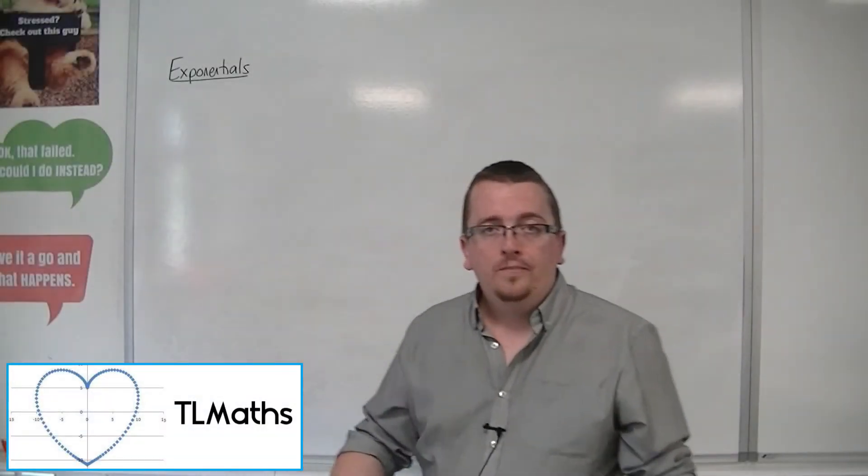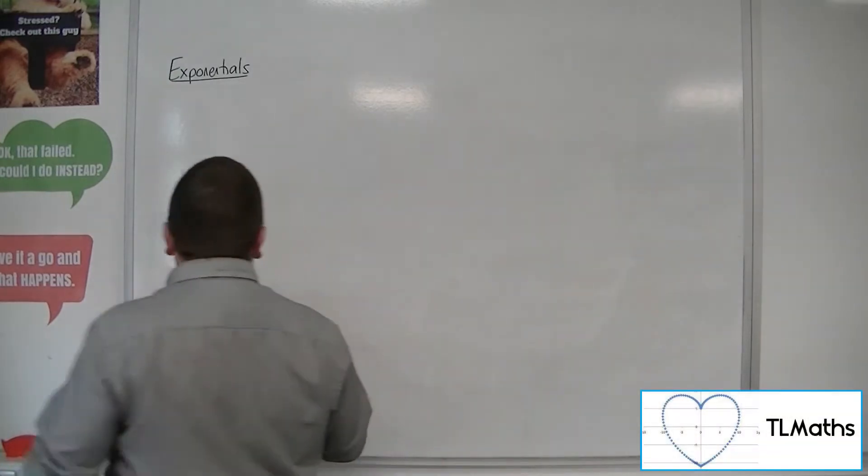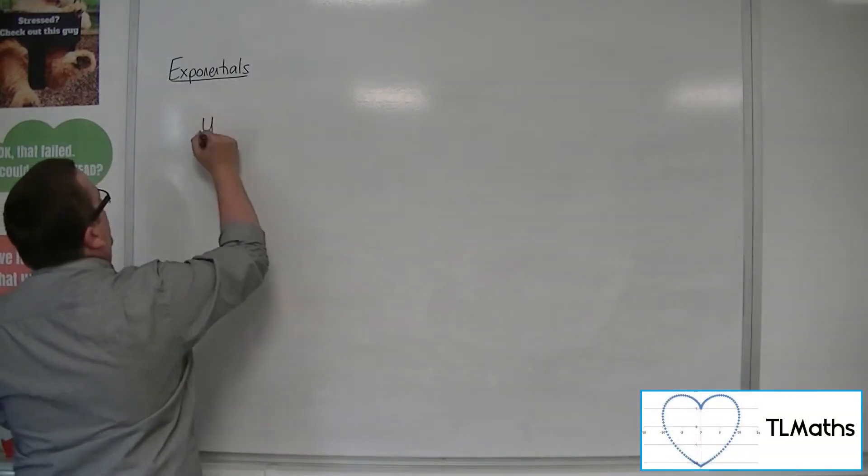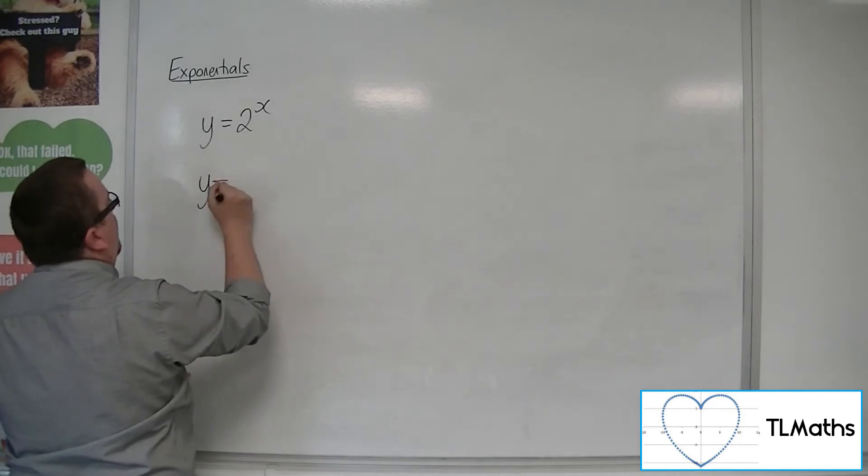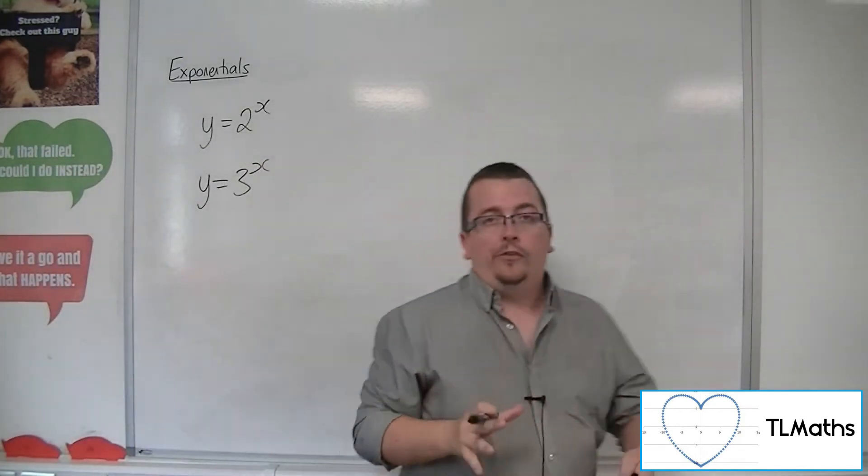So we need to know what y equals e to the x looks like. We know what y equals 2 to the x looks like, and what y equals 3 to the x looks like in comparison to one another on the same graph.